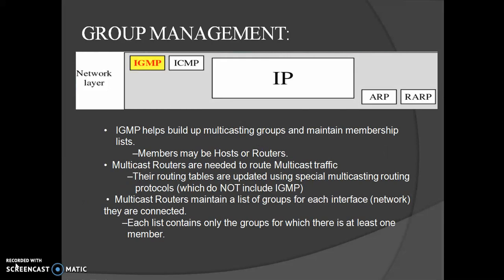For multicasting on the internet, we need routers that are able to route multicast packets. IGMP is not a multicasting routing protocol; it is a protocol that manages group membership. In any network, there are one or more multicast routers that distribute multicast packets to hosts or other routers. The IGMP protocol gives multicast routers information about the membership status of hosts connected to the network. If a router has no knowledge about membership status, it must broadcast all packets, which creates a lot of traffic and consumes bandwidth.